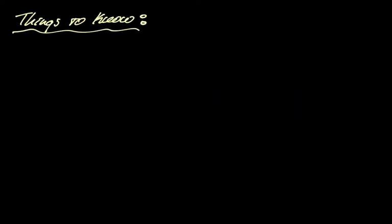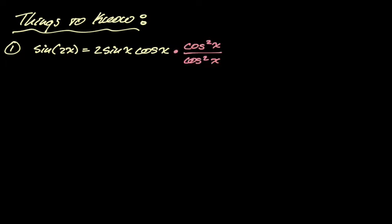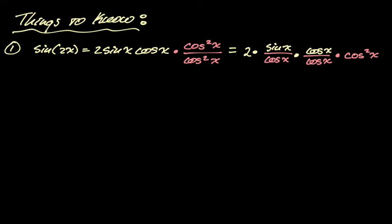There are two things we need to know first. The first is the double angle formula for sine: sine of 2x is 2 sine x cosine x. We're going to do some trig manipulations — multiply the top and bottom by cosine squared over cosine squared. Then take the cosine squared in the denominator, split it as cosine times cosine, and turn that into the denominator of sine and cosine. So sine over cosine becomes tangent, and we have a cosine squared left over.